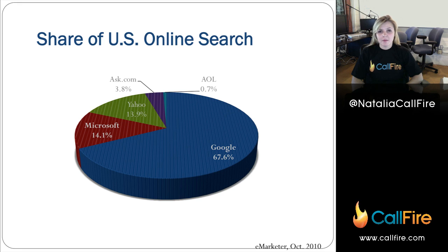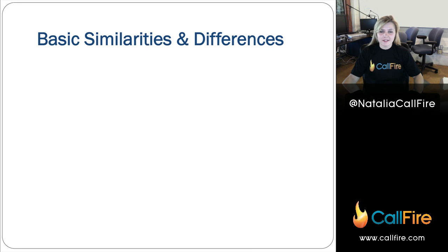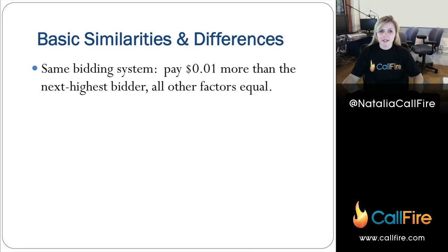That means when you're first transferring your campaigns, definitely make sure to change what your maximum bids are because they should be probably about a quarter of what they are on Google, if not less. Some basic similarities and differences that I've learned either from my experience or from online research is that the bidding system is the same. You're basically paying one cent more than the next highest bidder, assuming that all other factors are equal, so things like click-through rates and relevancy scores.